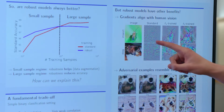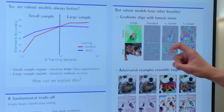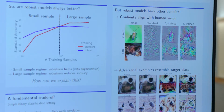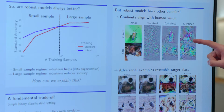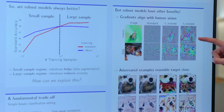This is the original example we're trying to classify. This heat map shows what the standard classifier cares about, and this one shows what the adversarially trained robust classifier cares about. You can see it's much more aligned with the actual beetle.